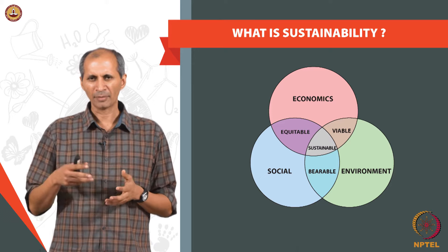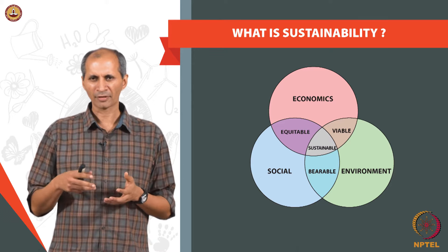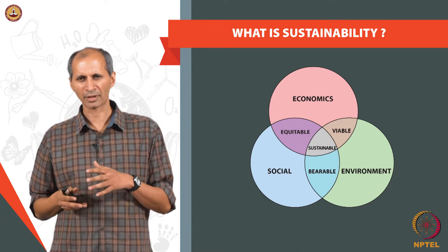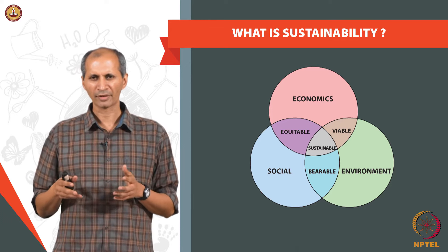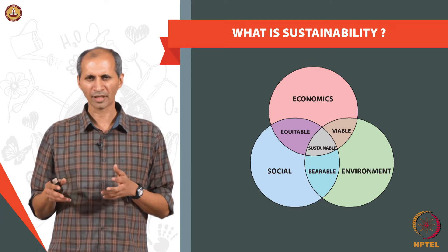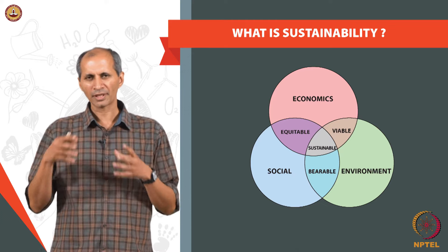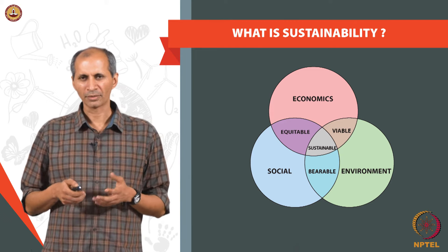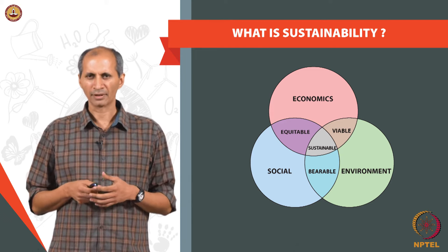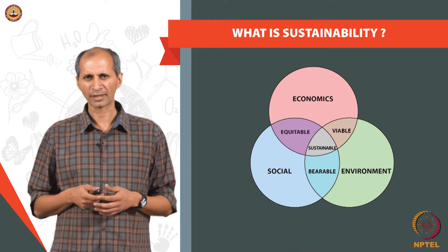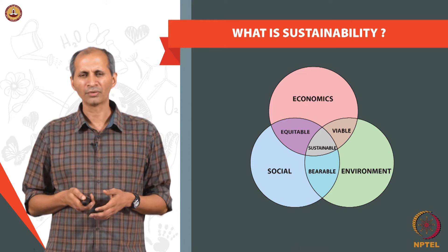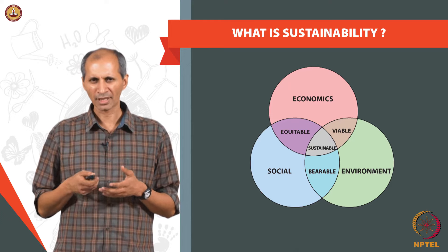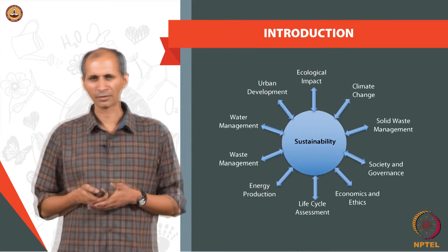When you have a balance between social and economic factors, we call that equitable. When we have a balance between economics and environment, we call it viable. When we have a balance between social and environment, we call it bearable. When all three are in balance, we call the situation or the system sustainable. We will study ecology and environment in this course from the point of view of sustainability.